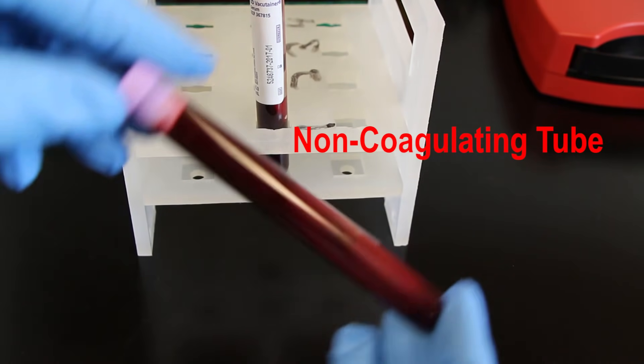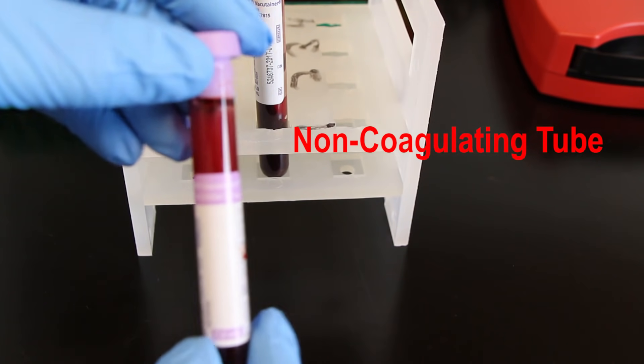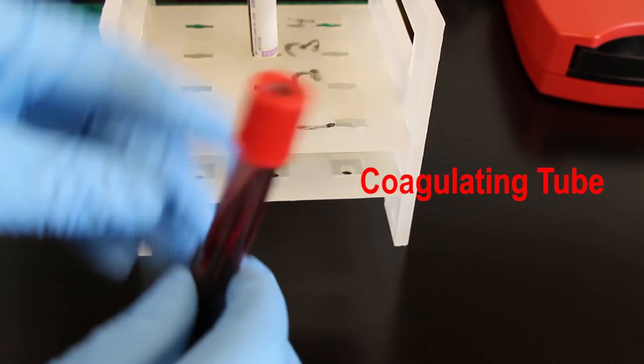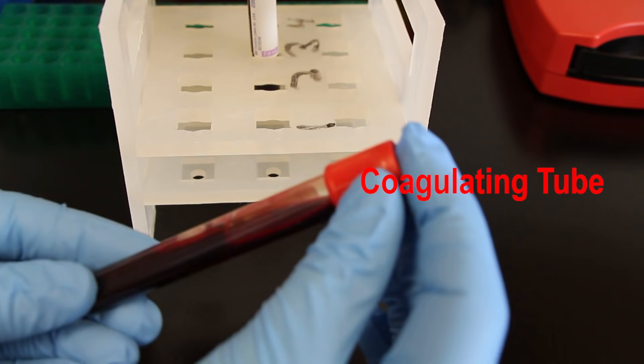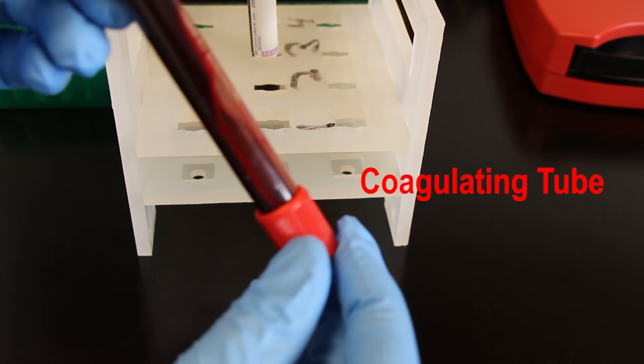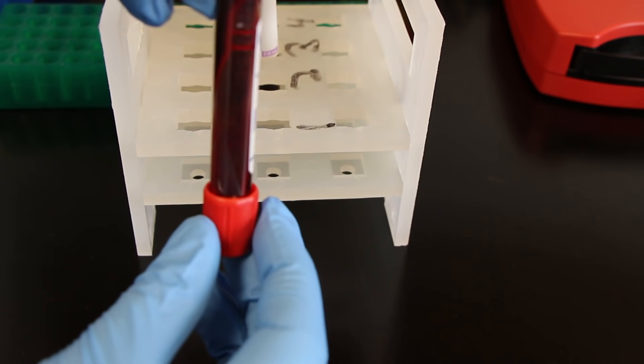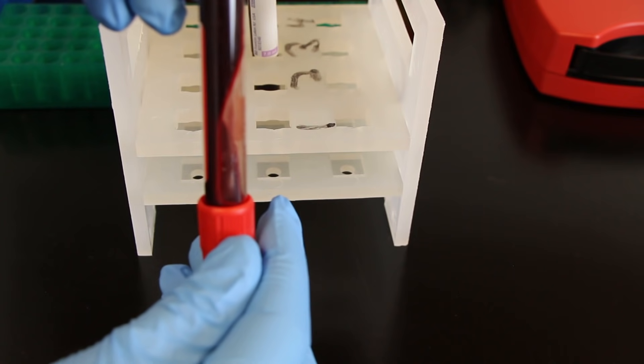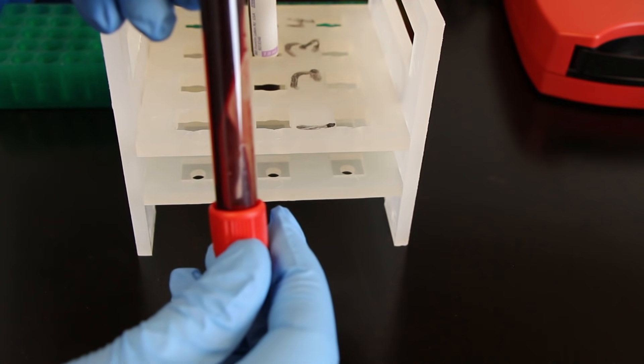One mistake I made that you're going to see in this video is that I forgot to put them in a tube holder. It doesn't really make a big difference, but it makes it hard to tell whether or not the blood has been coagulated because how you tell if blood has been coagulated is you take it and you very gently turn it upside down, and if the blood doesn't move, if it doesn't flow downward, then that means it's coagulated. You can still see that with it being on its side, it's just not quite as clear.